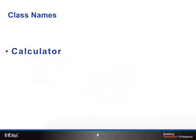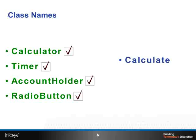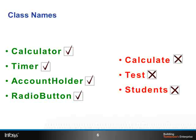Calculator, timer, account holder, and radio button are examples of correct class names. Calculate, test, and students are bad names for classes.